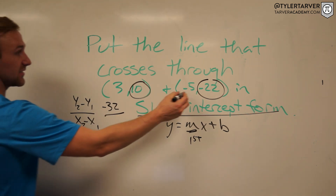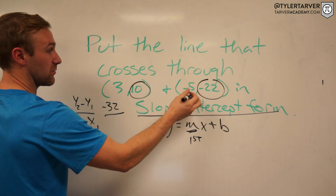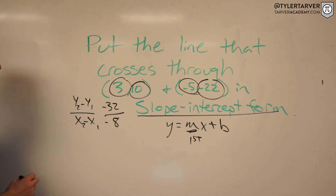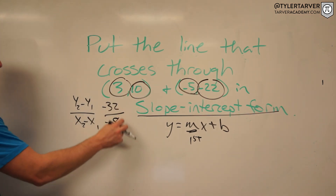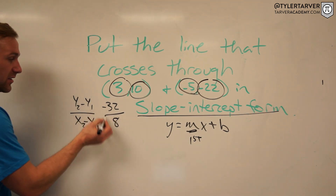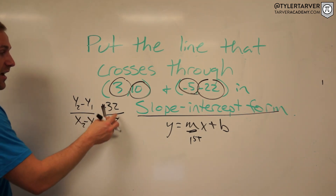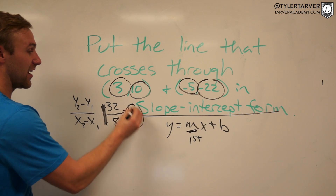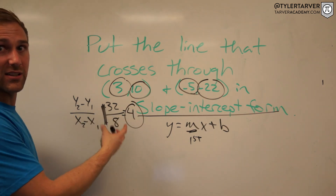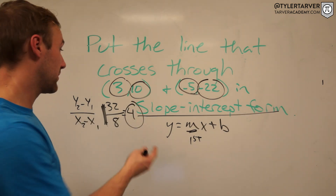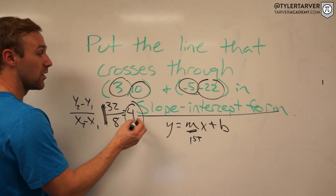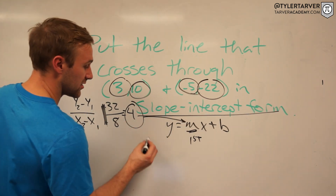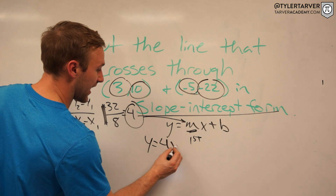So we get negative 22 minus 10, which is negative 32, and then we take our x's: negative 5 minus 3, which is negative 8. The two negatives cancel each other out, and 32 divided by 8 is 4. So my slope is 4 — you thought it was going to be complicated, but it simplified nicely.